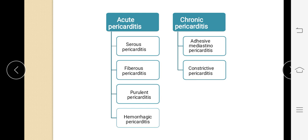Additional symptoms include sharp piercing chest pain over the center or left side of the chest, most intense when the patient takes a breath, shortness of breath, heart palpitations, low-grade fever, weakness, sweating, feeling sick, cough, and abdominal or leg swelling. Pericarditis is classified as acute or chronic. Acute has four types: serous, fibrinous, purulent, and hemorrhagic. Chronic has two types: adhesive and constrictive.